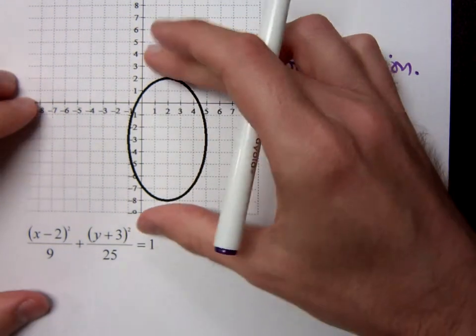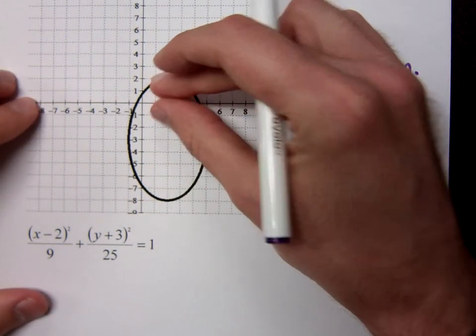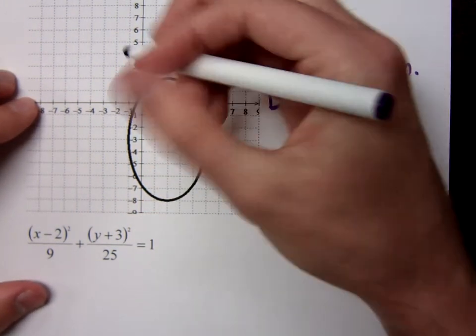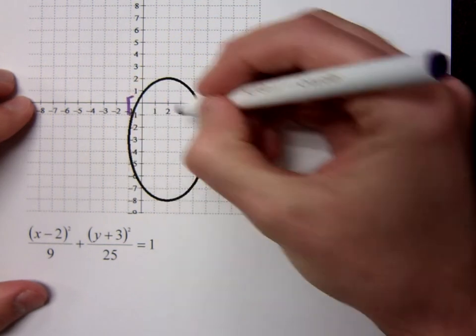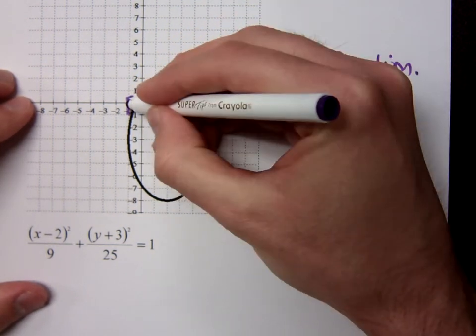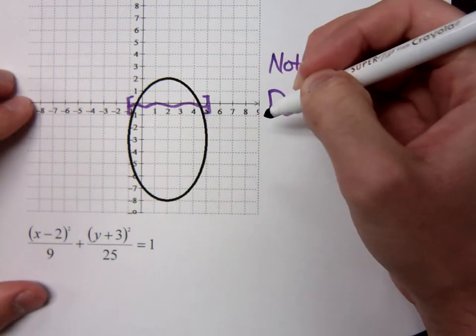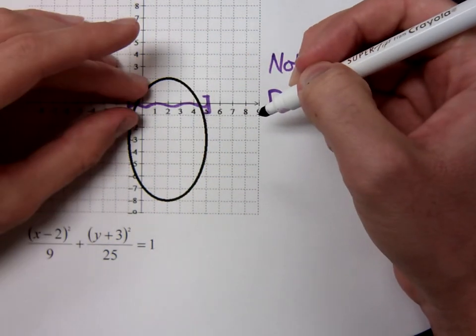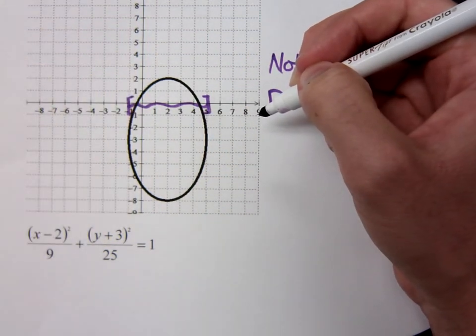And so one way of doing that is by just kind of smashing all of this onto the x-axis. And when I do that, I would be including everything from negative 1 to positive 5. You would see all that being included if you were to smash onto the x-axis. Do you all agree? That's how you find the domain.